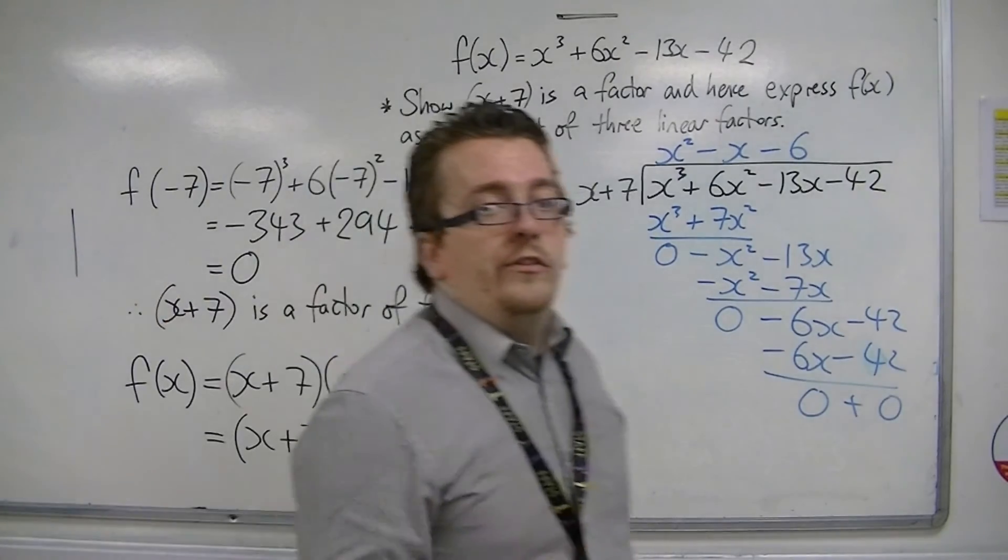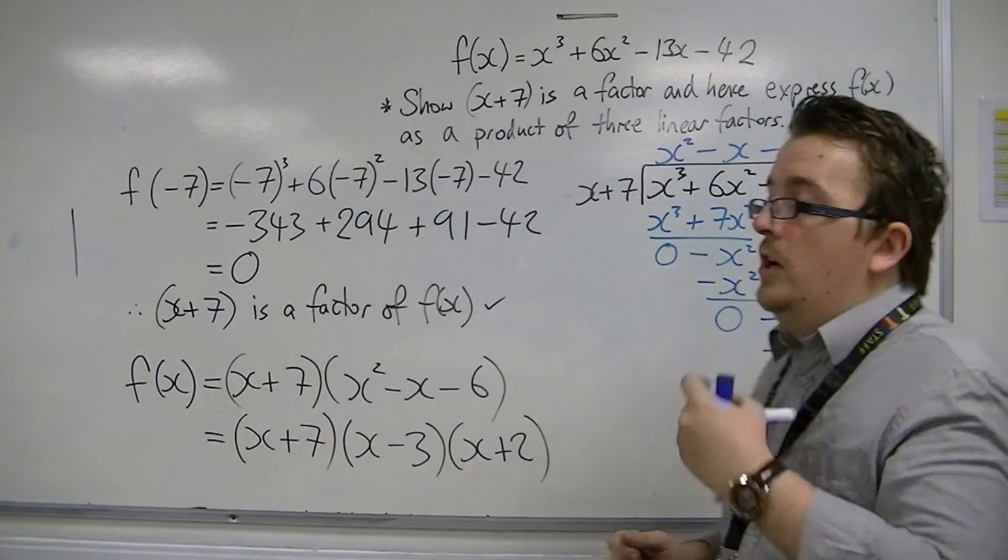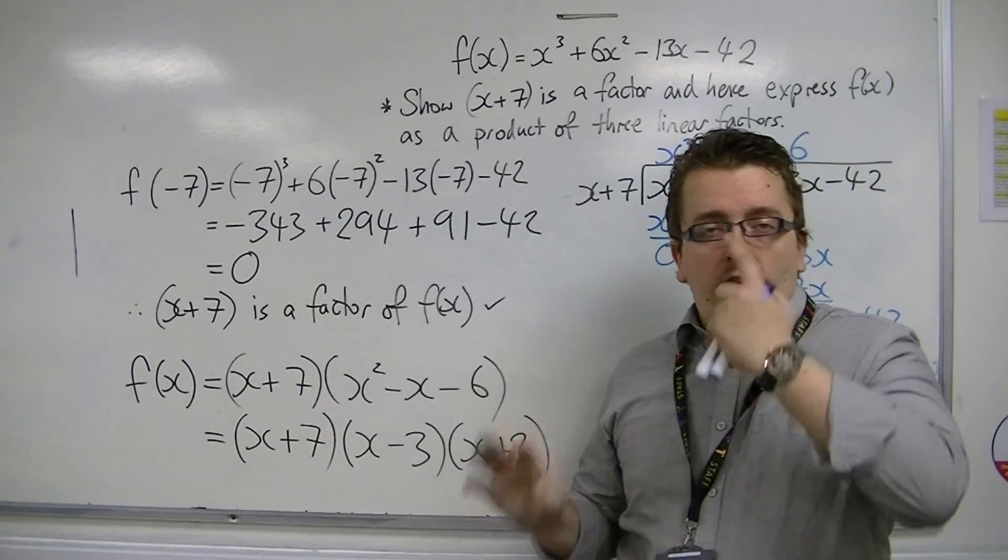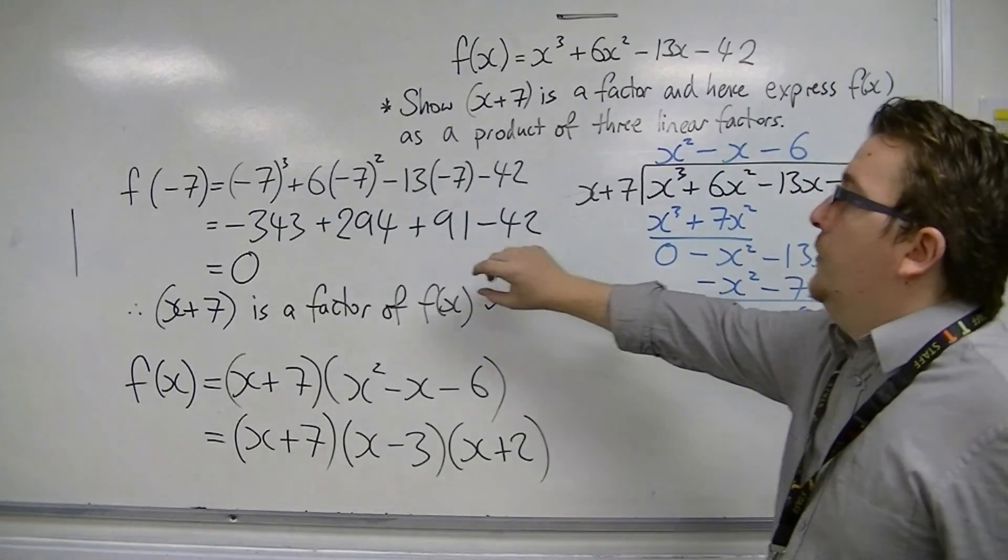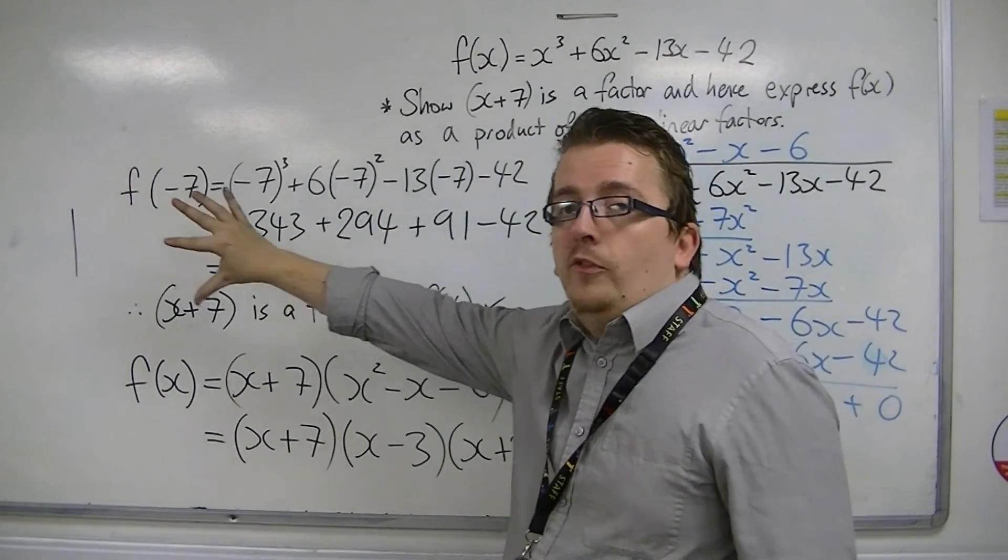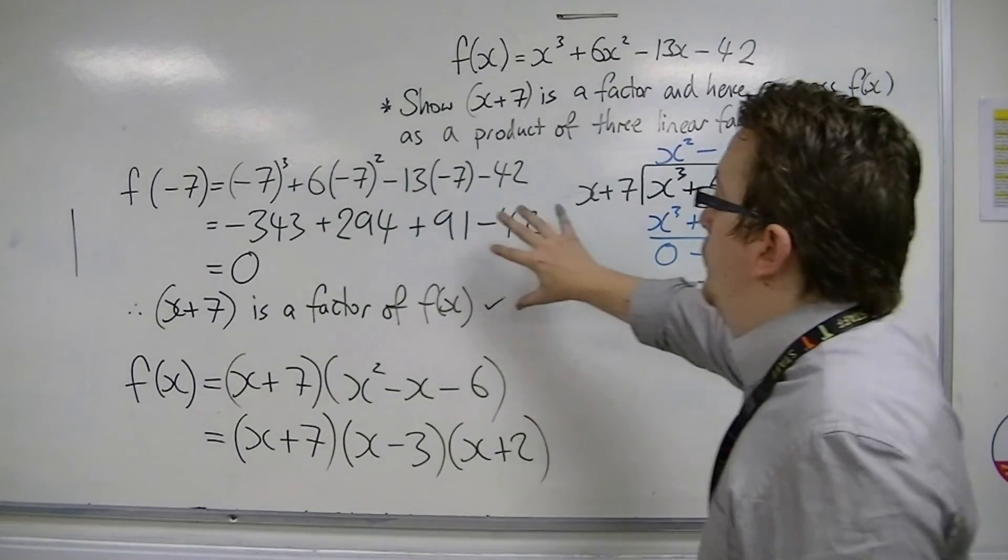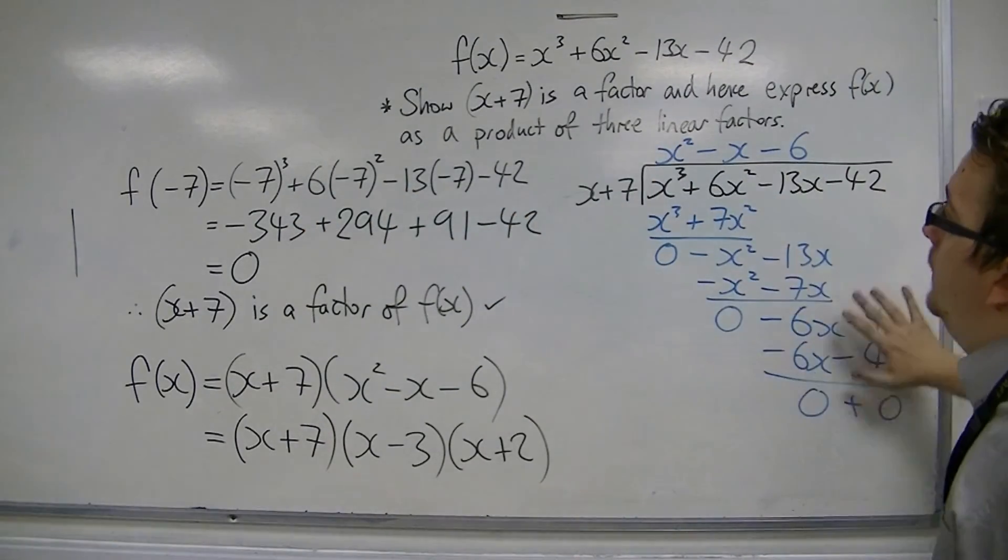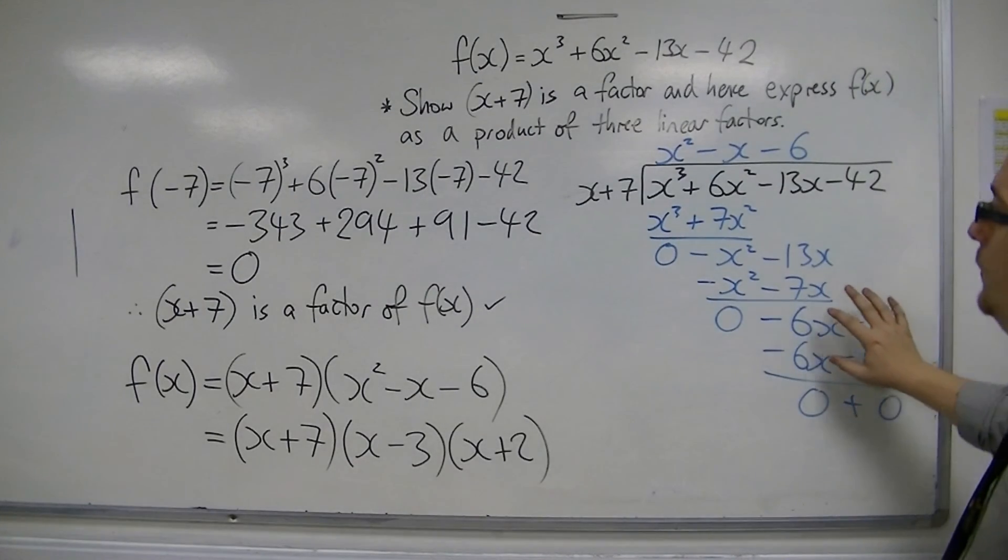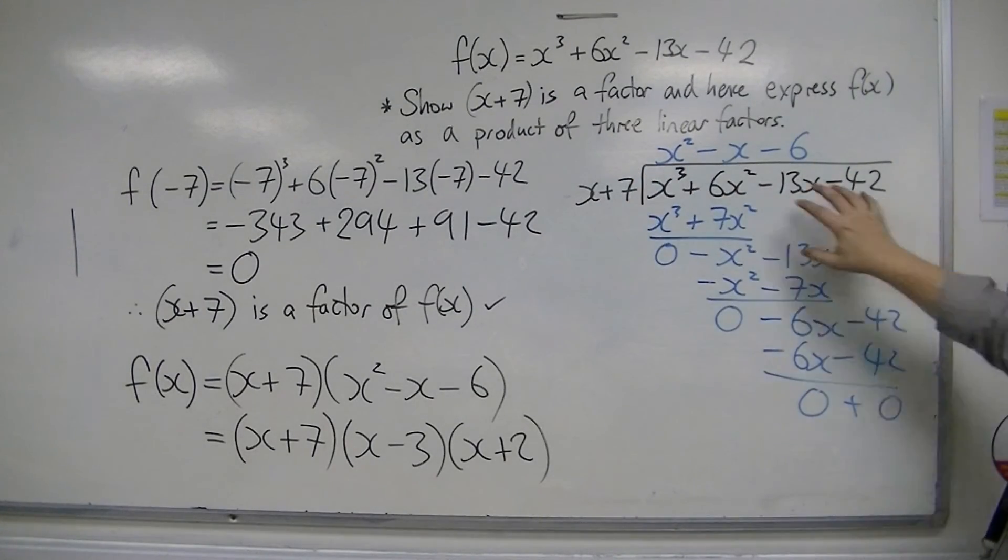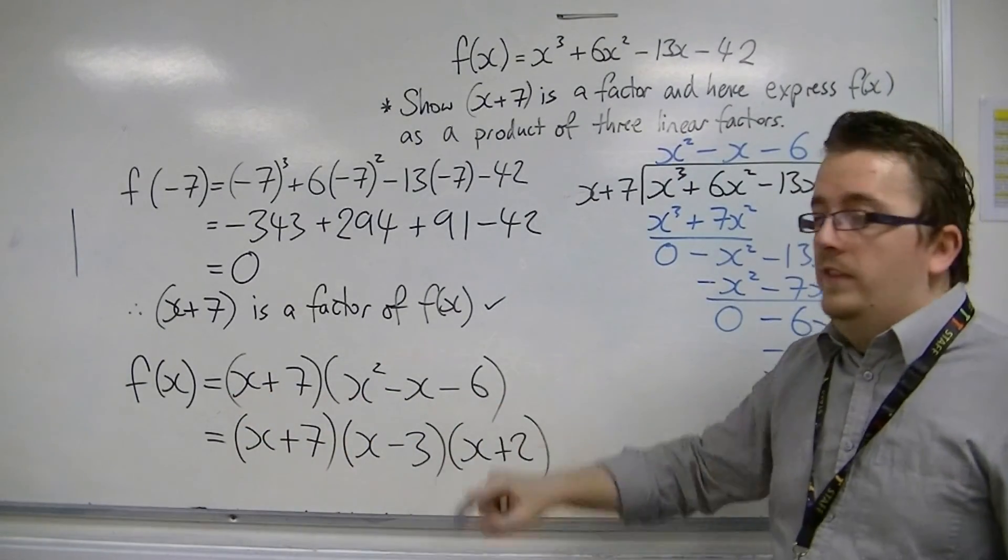So from this, what you can see is that this is pretty much two parts of an exam question. The first is showing that x plus 7 is a factor, and notice how I use the factor theorem and not polynomial division. The polynomial division will come into the next part, where you want to write f of x as a product of three linear factors. So you use polynomial division to do the division so that then you can factorise this quadratic.